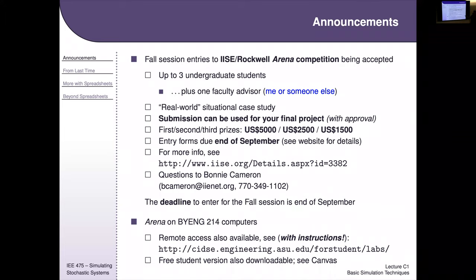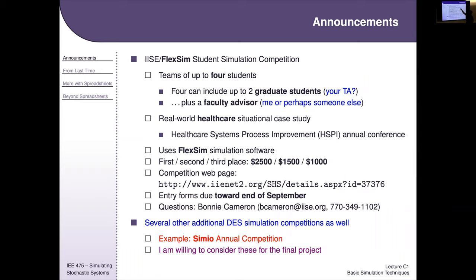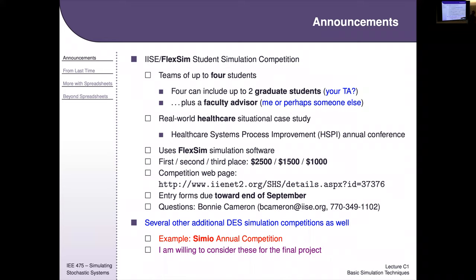There's a Rockwell Arena competition with entry forms due September 30th — see the website for details. This is fine to use as your final project. There's also FlexSim with a September 20th deadline, and a Simio competition as well. All of these are options for your final project, and they have monetary rewards.